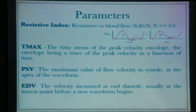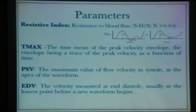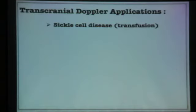What we measure: the first parameter is the resistive index — systole minus diastole divided by systole — with a cutoff of 0.6, which is normal. Tmax is the time to reach peak velocity. We also measure peak systolic and end-diastolic velocities. These are the core quantitative parameters of transcranial ultrasound assessment.